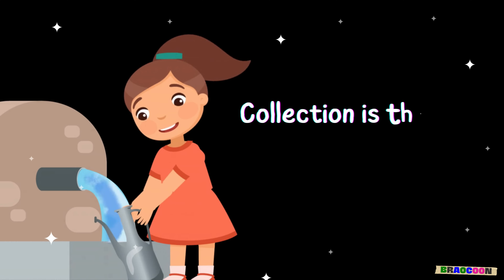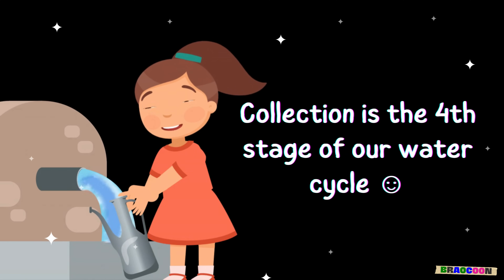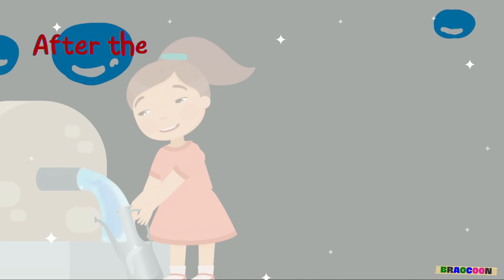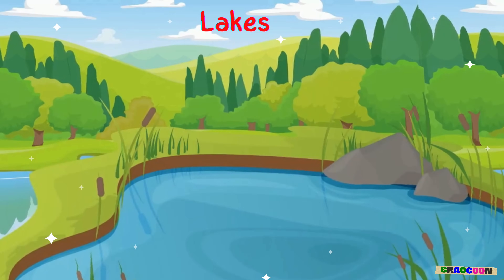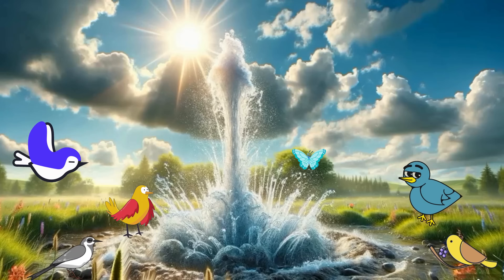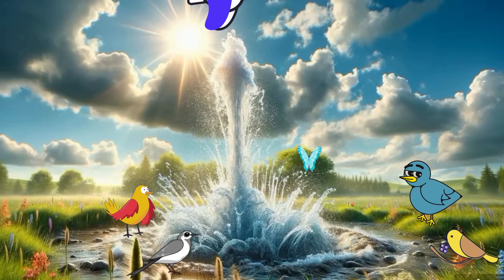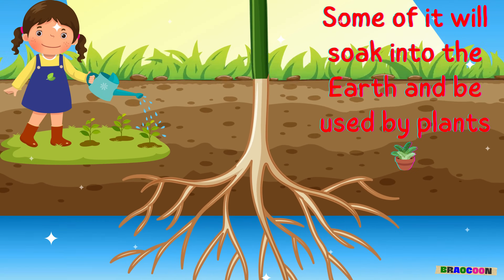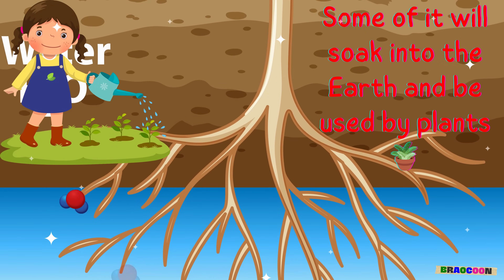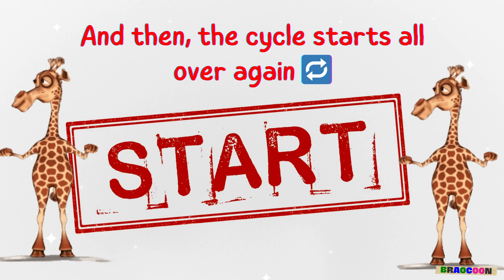Collection is the fourth stage of our water cycle. After the water falls, it collects in oceans, lakes, rivers, and even underground. Some of it will soak into the Earth and be used by plants. And then the cycle starts all over again.